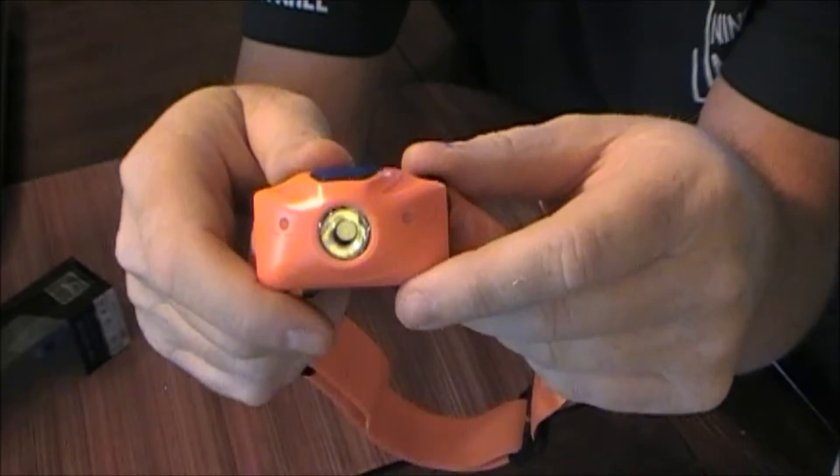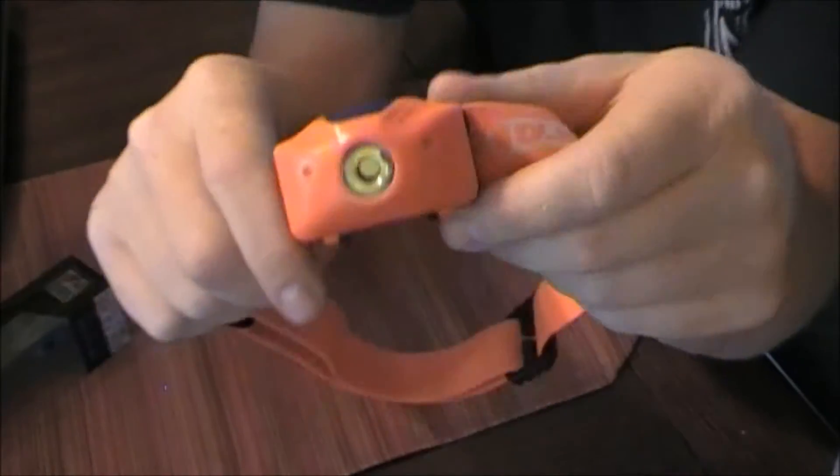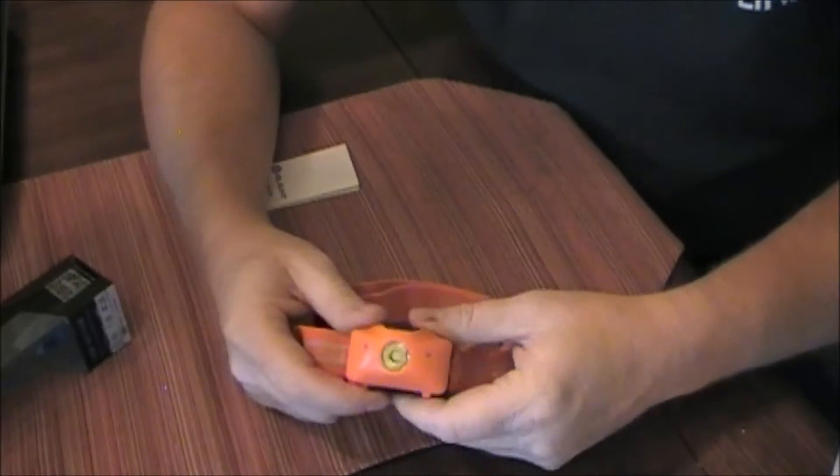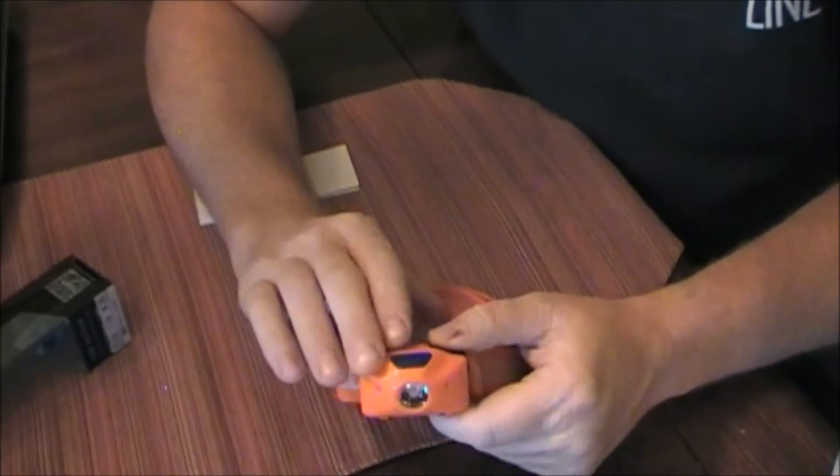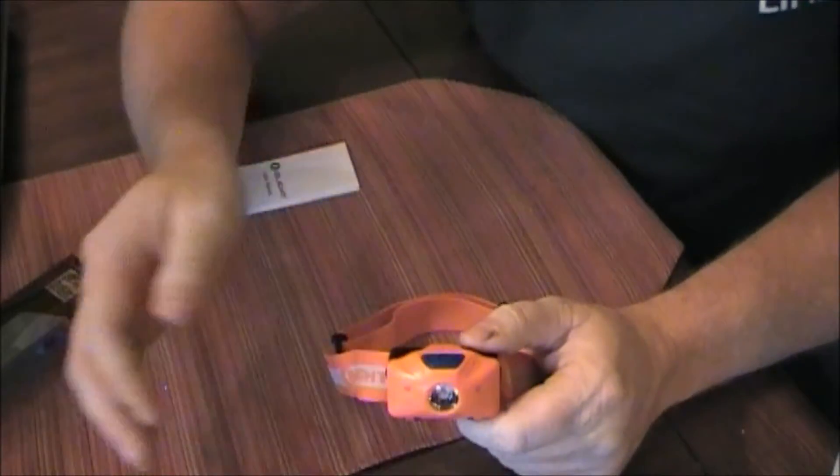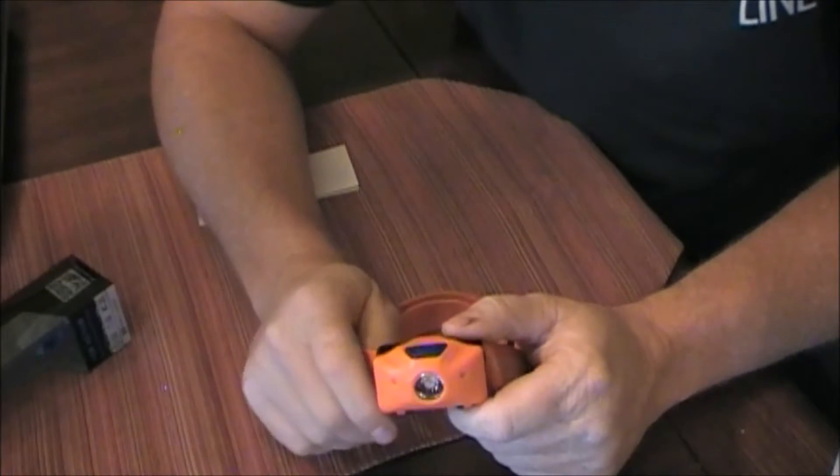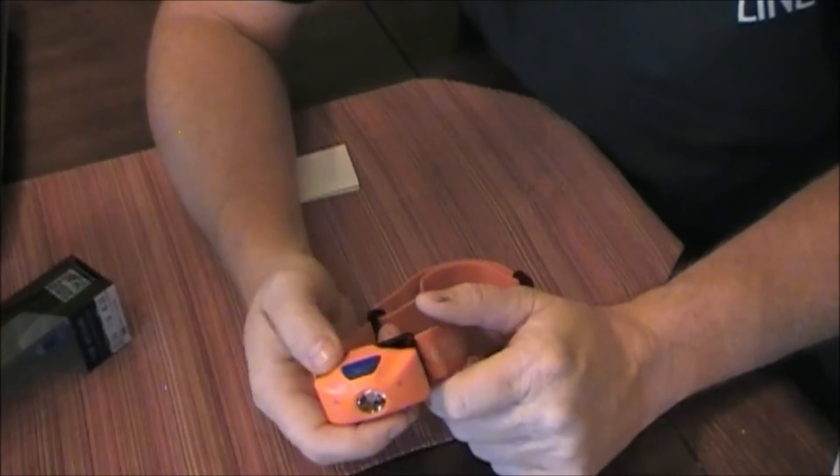it's also 50 more lumens, 200 lumens, whereas this one is 150. So for 10 more dollars, I think it would be well worth paying that. And if you don't want to operate it in the light sensor mode, you can operate it just like this one.